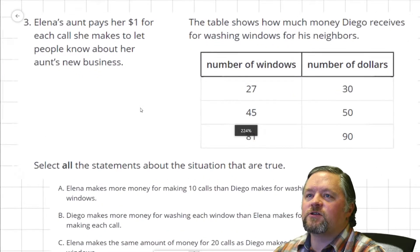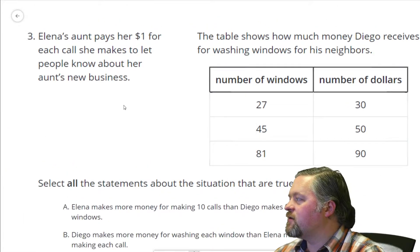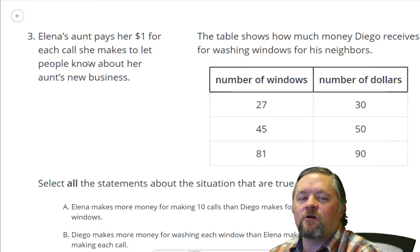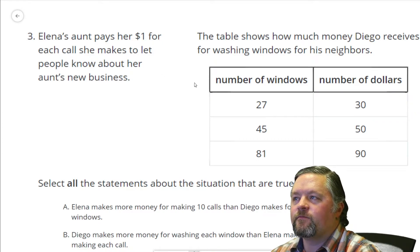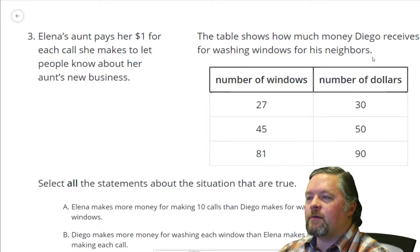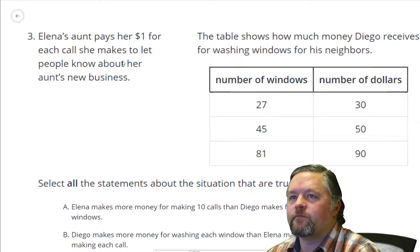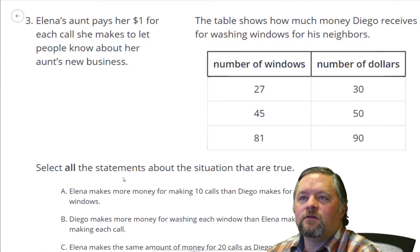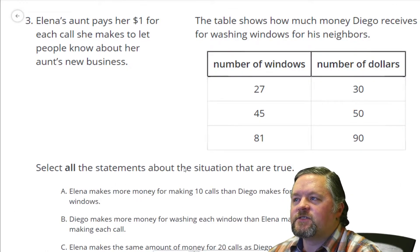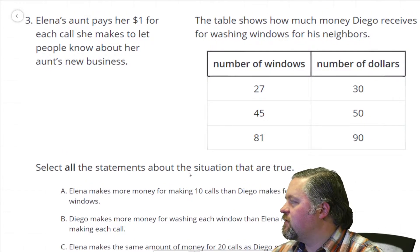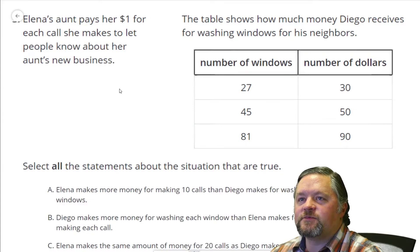Okay, next question. Elena's aunt pays her $1 for each call she makes to let people know about her aunt's new business. The table shows how much money Diego receives for washing windows for his neighbors. Select all the statements that are true. Well, I see a couple different relationships here.